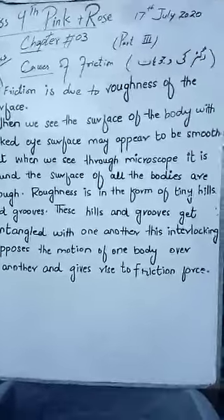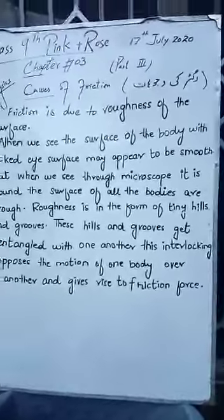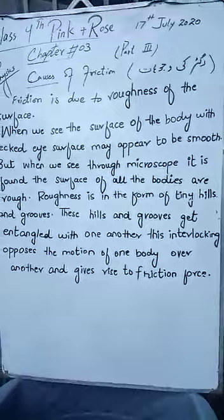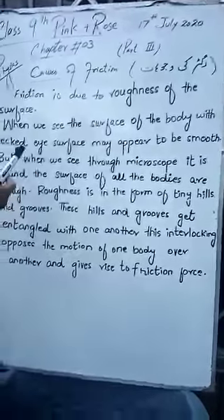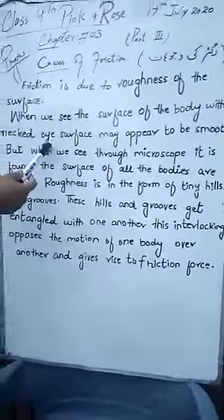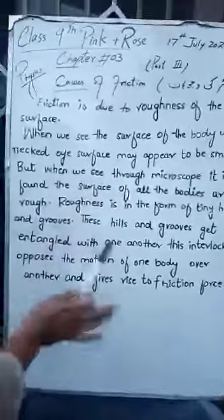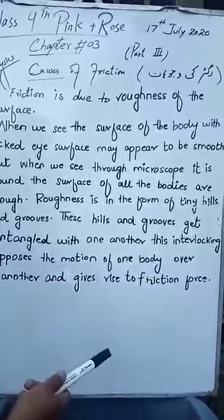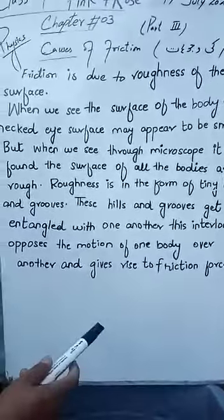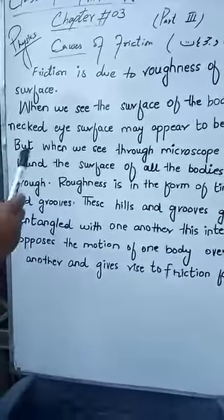Friction is due to the roughness of the surface. When we see the surface of the body with the naked eye, the surface may appear to be smooth. If you look at the body, it looks smooth, but if you look from the microscope, the surface is not smooth.